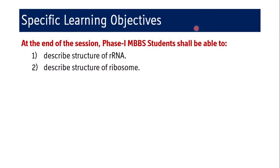The specific learning objectives of this session are: at the end of the session, Phase 1 MBBS students shall be able to describe the structure of rRNA and describe the structure of the ribosome in eukaryotes.